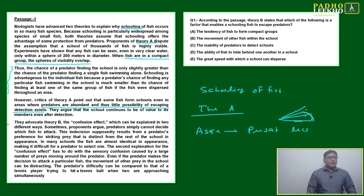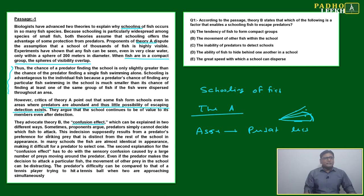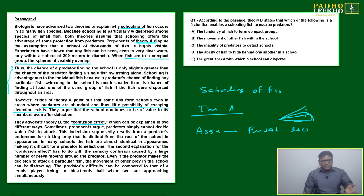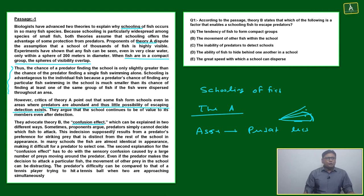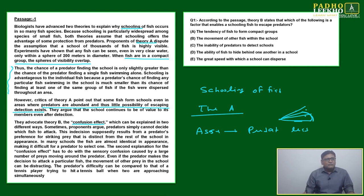Now Theory B — it is a confusion effect, which can be explained in two different ways. Proponents argue predators simply cannot decide which fish to attack. This indecision is the confusion effect — the predator cannot decide which fish to attack.